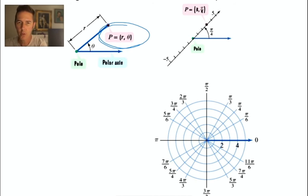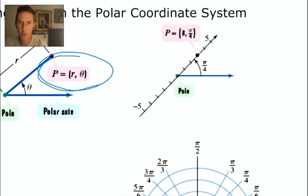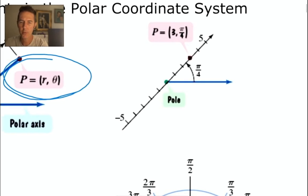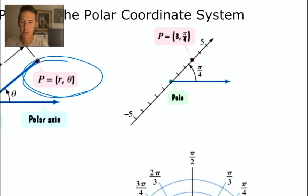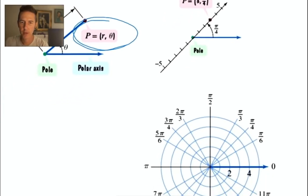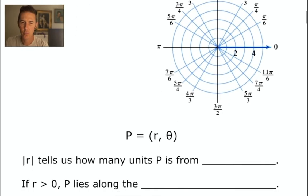Here actually at the top of the screen, we see an example of this point, 3 comma pi over 4. And you notice that we have rotated pi over 4 radians up and away from the polar axis. In other words, the positive x axis. And then the r value of 3 moved us 3 units in that direction. So starting from the pole, we have moved 3 units in the direction of pi over 4. And we're going to do some more examples of plotting polar points right away.